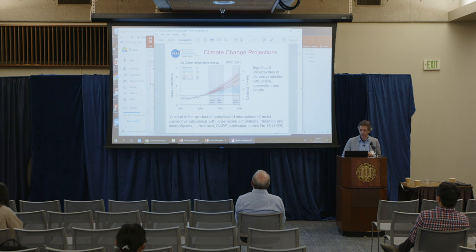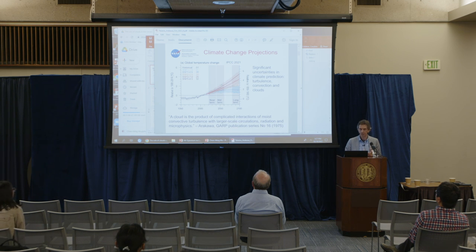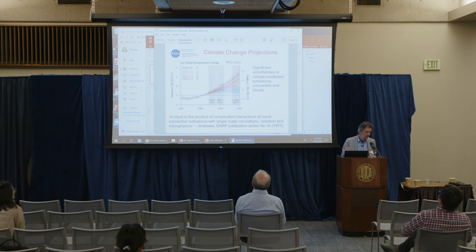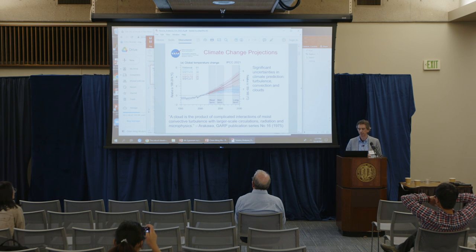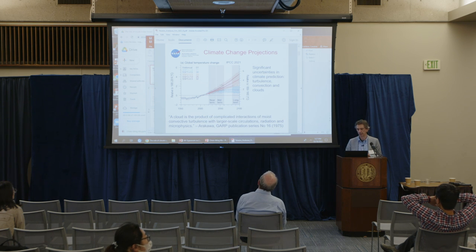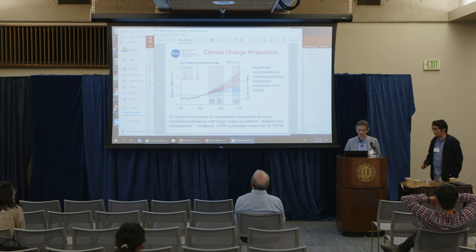I'll start with a figure that many of you have seen many times and that many of you have helped produce in one way or another. The key aspect here is really the fact that it highlights the significant uncertainties in climate prediction. And it's sort of well accepted that these uncertainties are related to clouds, and this entire group has worked on this.